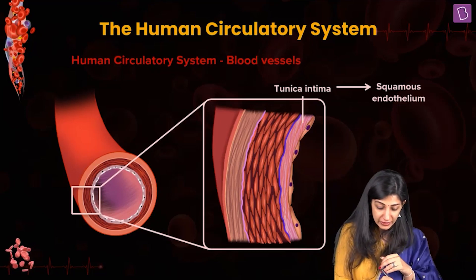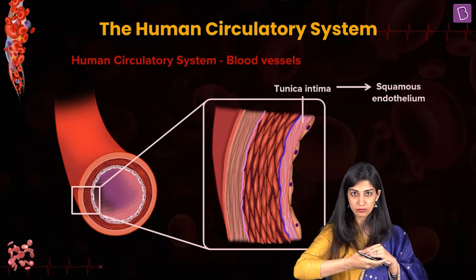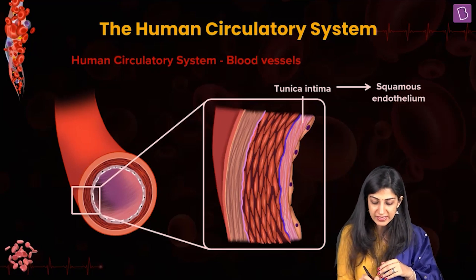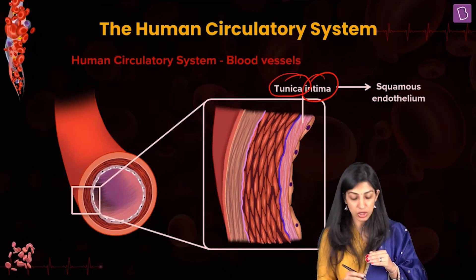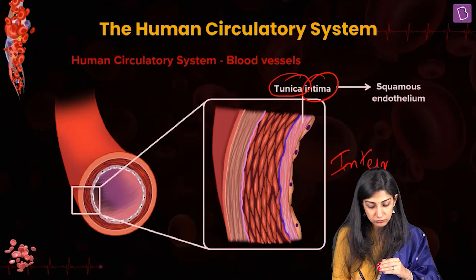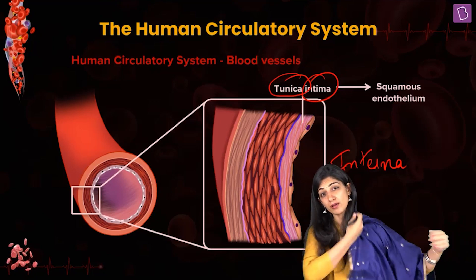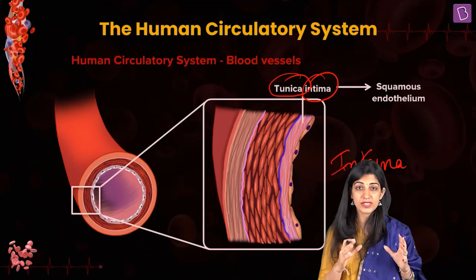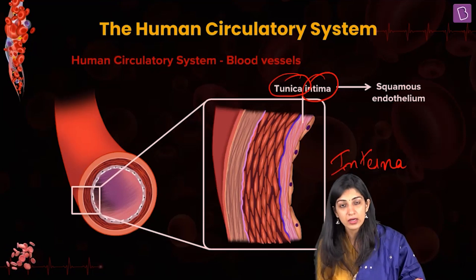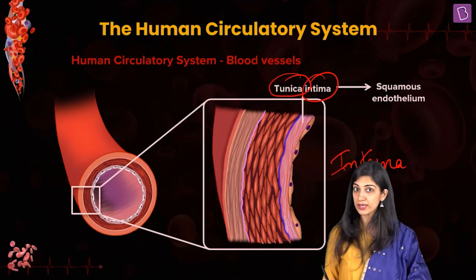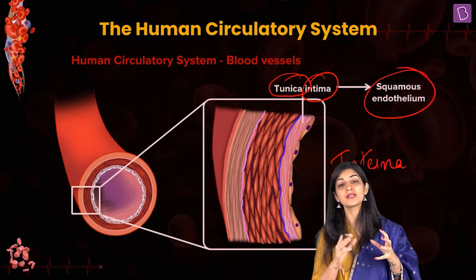Starting from inside to outside — if I take a cross section, if I cut the pipe, the innermost layer is the tunica intima. Intima means internal; you can also say tunica interna. It is made up of the endothelium, which is nothing but the squamous epithelium — flattened squamous epithelium. Tunica intima is elastic.